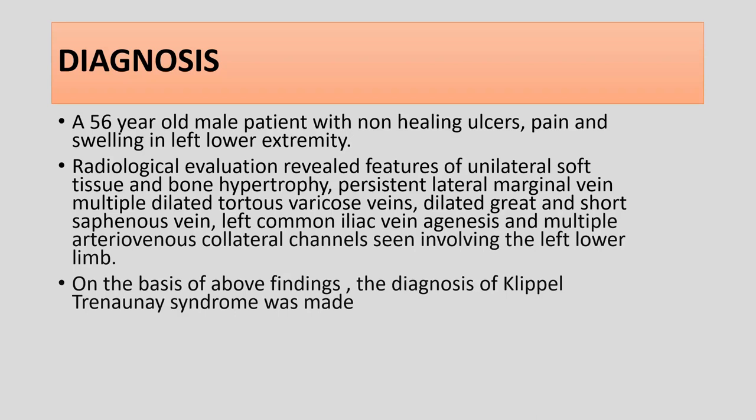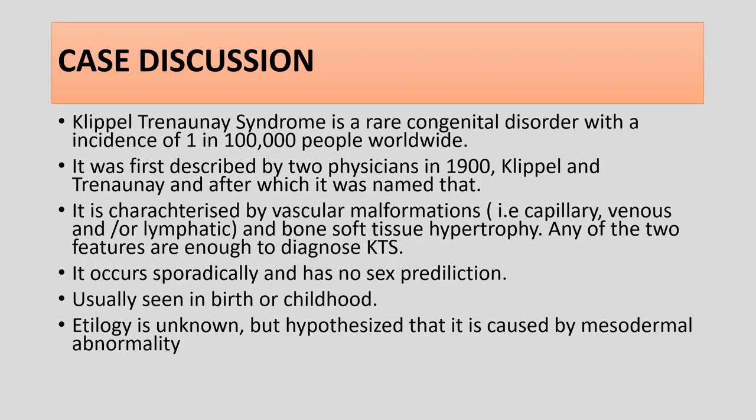Diagnosis: a 56-year-old male patient with non-healing ulcers, pain and swelling in the left lower extremity. Radiological evaluation revealed features of unilateral soft tissue and bone hypertrophy, persistent lateral marginal vein, multiple dilated tortuous varicose veins, dilated great and short saphenous vein, left common iliac vein agenesis, and multiple arteriovenous collateral channels involving the left lower limb. On the basis of the above findings, the diagnosis of Klippel-Trenaunay syndrome was made.